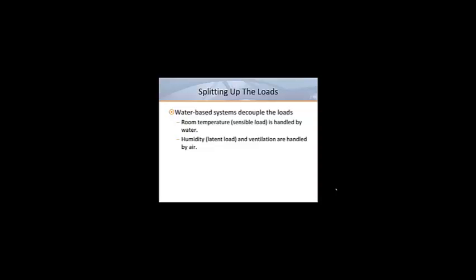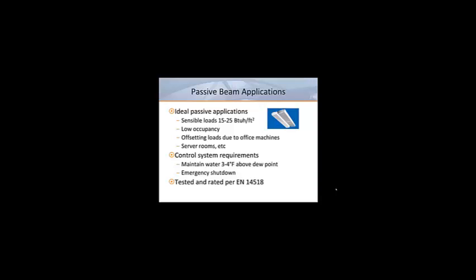Now that we know what passive and active beams are, let's take a look at the best practices and applications for both. Passive beams are best suited for handling spaces where the sensible loads range from 15 to 25 BTUs per hour per square foot. They're typically used to provide additional cooling to offset loads created by internal heat sources like office machines. For this reason, they are often found in low occupancy spaces like server rooms. Supply water temperature should be maintained 3 to 4 degrees Fahrenheit above the room dew point to prevent the possibility of condensation. In addition, the control system must be designed to automatically shut down water flow to the beams in the event that windows or outside doors are left open allowing excessive outdoor air infiltration. Currently, the passive beams are tested and performance rated in accordance with a European standard called EN 14518.